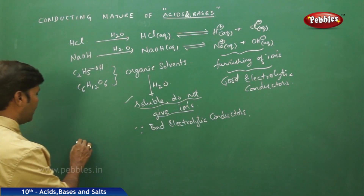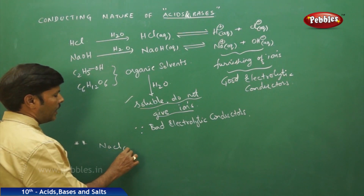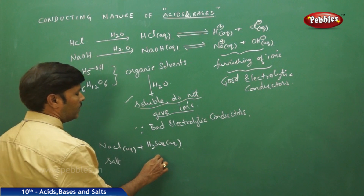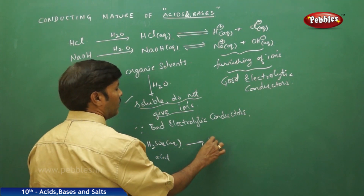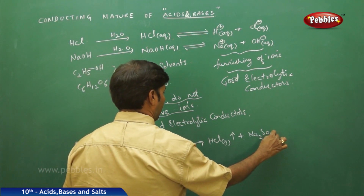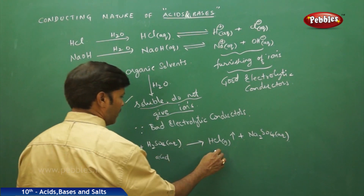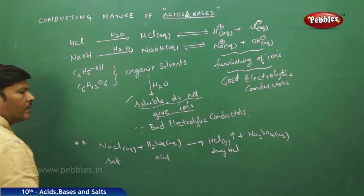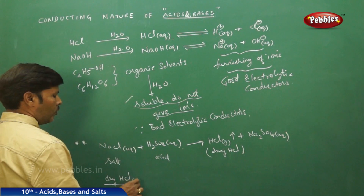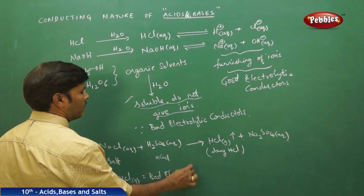One important point to note: if you take NaCl(aq) and treat it with H₂SO₄(aq), the salt reacts with the acid to give HCl gas or vapour and sodium sulfate(aq). This HCl gas is dry HCl. Dry HCl does not contain any ions, so it does not ionize — it is a bad electrolytic conductor.